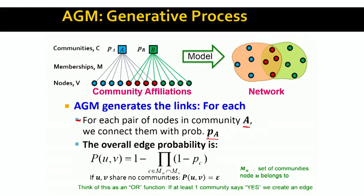Given a pair of nodes and all the communities they belong to, how likely is this pair to connect? They connect if at least one of the communities they have in common creates an edge. The formula is: the probability that nodes u and v are connected is 1 minus the product over all communities they have in common of (1 minus P_C). This is essentially an OR function — a pair of nodes will connect if at least one of their shared communities creates an edge.